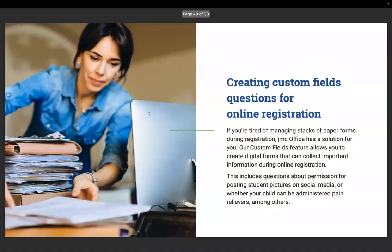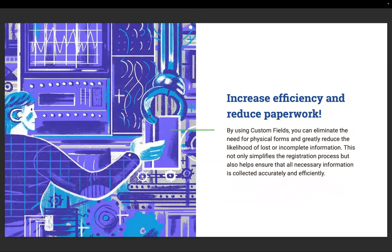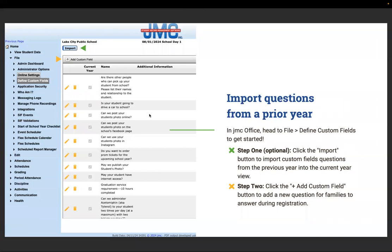Creating custom fields and custom health questions. If you're tired of managing stacks of paper forms during registration, JMC office has a solution. Our custom field features allow you to create digital forms that collect important information during online registration — including questions about permissions for posting student pictures on social media or whether your child can be administered pain relievers. By using custom fields, you can eliminate the need for physical forms and greatly reduce the likelihood of lost or incomplete information. In JMC office, go to File > Define Custom Fields to get started.